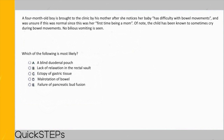A 4-month-old boy is brought to the clinic by his mother after she notices difficulty with bowel movements. The child is sometimes known to cry during bowel movements. No bilious vomiting is seen. We made this question intentionally ambiguous. For choice A, a blind duodenal pouch describes duodenal atresia, which presents immediately after birth — not months later — and is associated with bilious vomiting not seen in this patient. For choice B, lack of relaxation in the rectal vault is hallmark for Hirschsprung's disease, and this child is too old for that presentation.